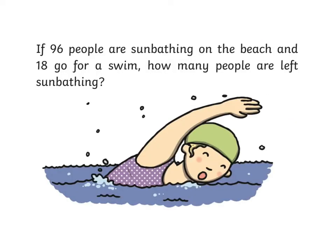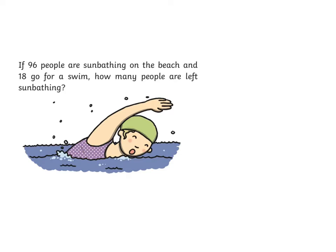Now, let's have a look at this problem. If 96 people are sunbathing on the beach, and 18 go for a swim, how many people are left sunbathing? A really good clue in this problem is where it says 'how many people are left?' This is going to be a subtraction problem, so we'd write this as an equation like this: 96 take away 18 equals, and you'd work out the answer to the problem.